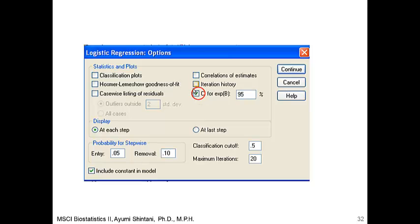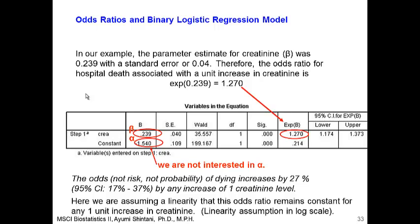We click the 95% confidence interval option and run the model. In our example, the parameter estimate for creatinine was 0.239, which translates into an odds ratio of 1.27.